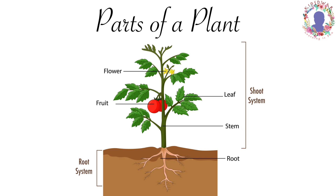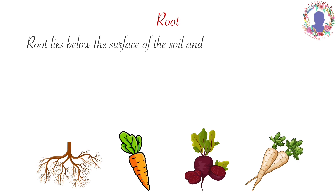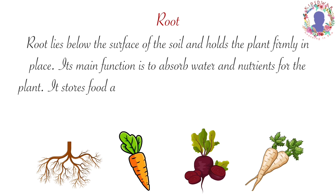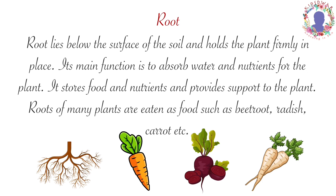Root system is below the soil and comprises of roots. Shoot system is the part above the soil and comprises of stem, leaf, flower and fruit. Root lies below the surface of the soil and holds the plant firmly in place. Its main function is to absorb water and nutrients for the plant. It stores food and nutrients and provides support to the plant. Roots of many plants are eaten as food such as beetroot, radish, carrot, etc.